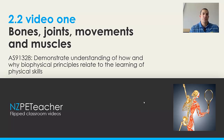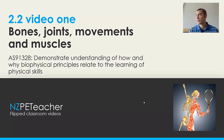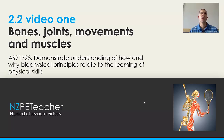Kia ora team, welcome to our first FLIP video on Achievement Standard 91328, which is demonstrate an understanding of how and why biophysical principles relate to the learning of physical skills. In this video we are going to look at specifically joints and movements around the joint, and we will touch on bones and muscles. This will just be a recap on topics that you covered last year in Level 1, so we'll only touch very briefly on some of the joints, movements, bones and muscles.